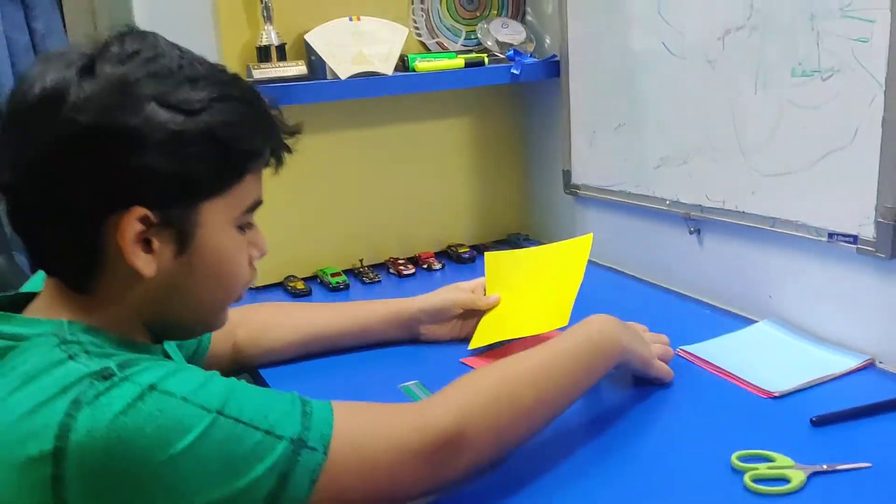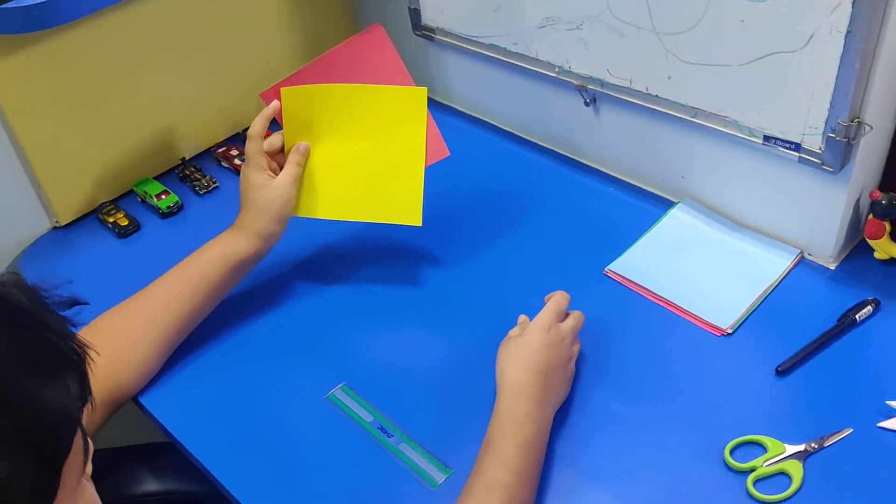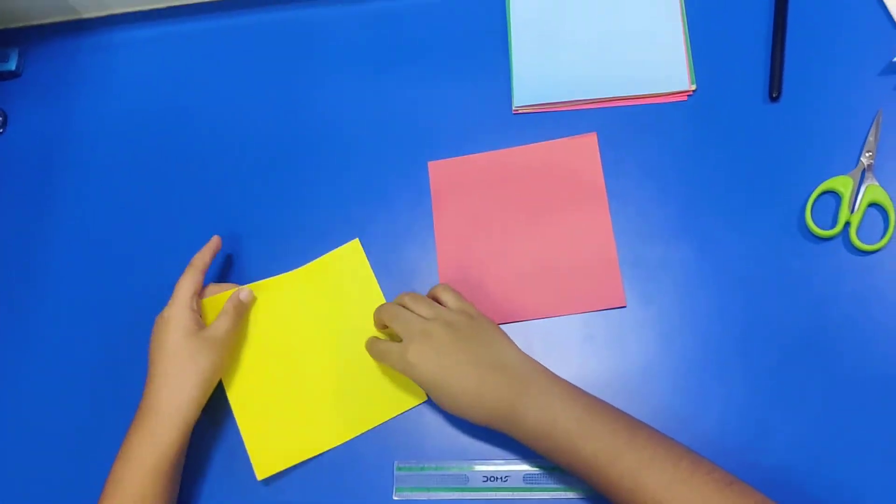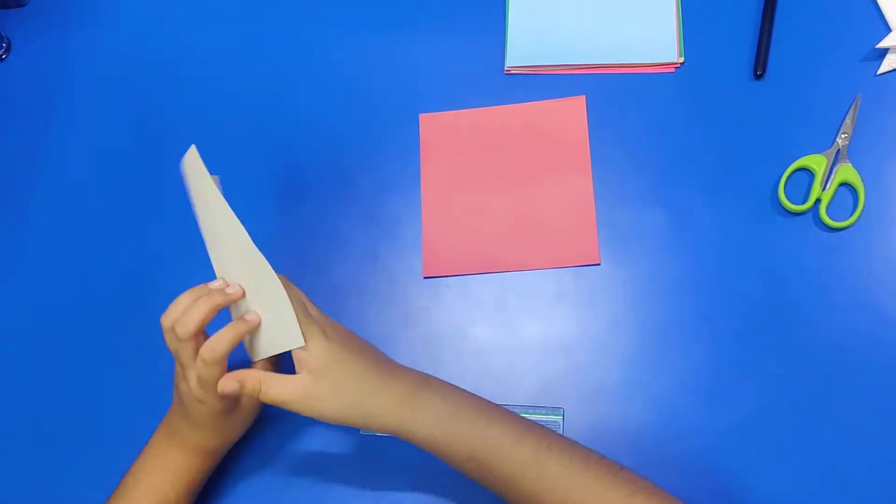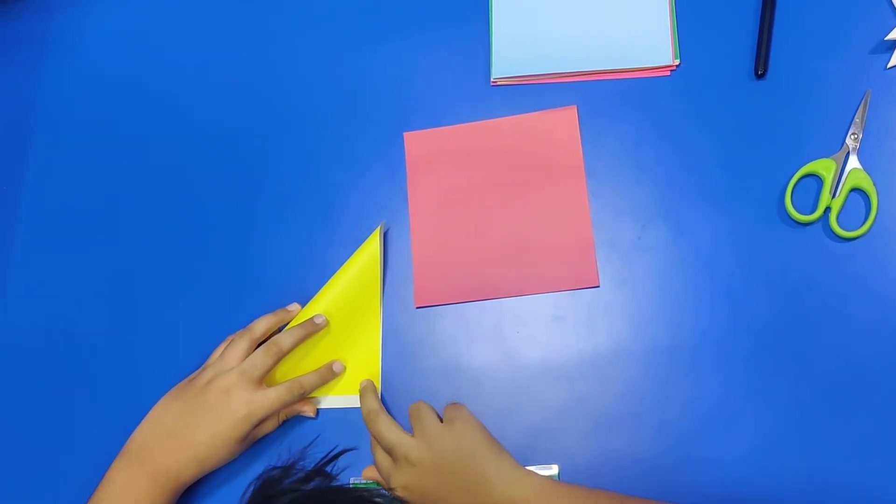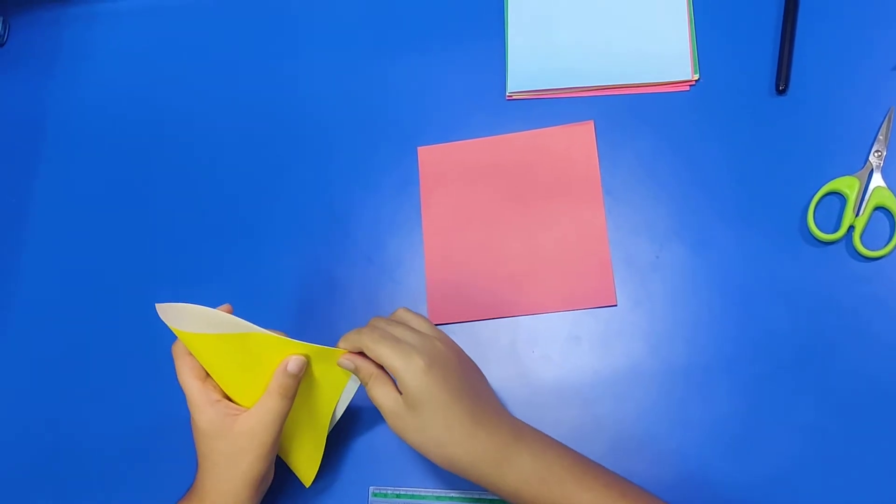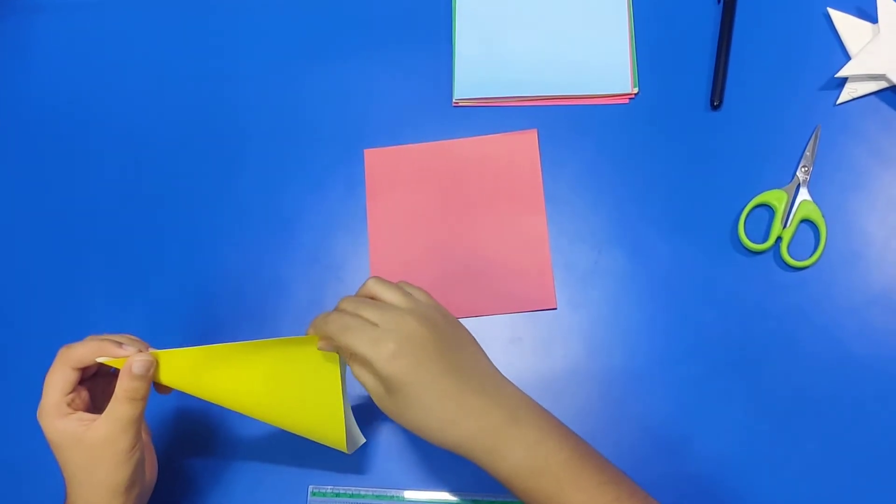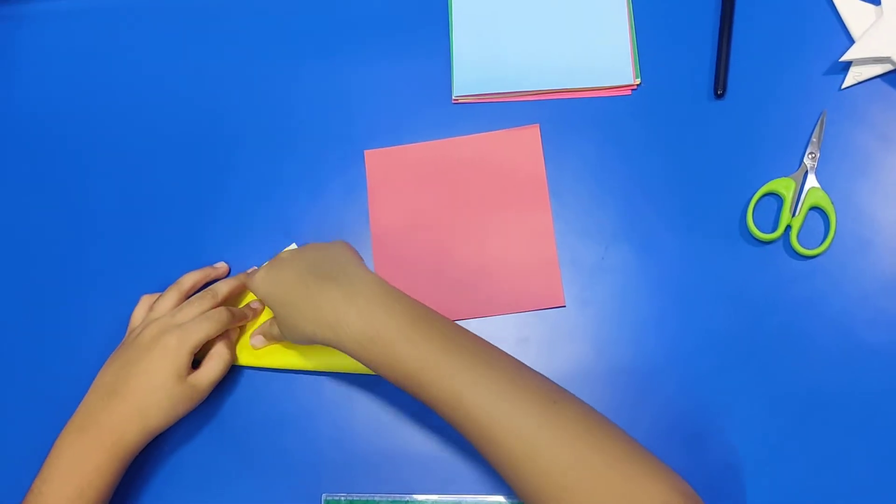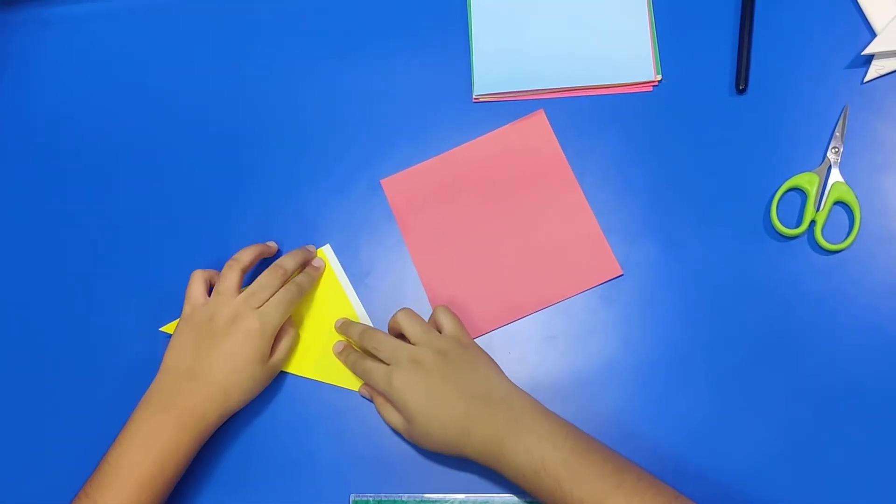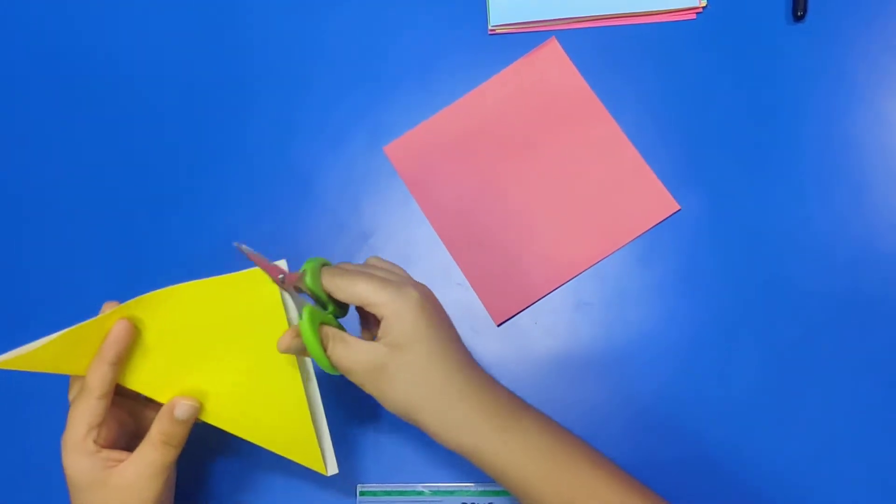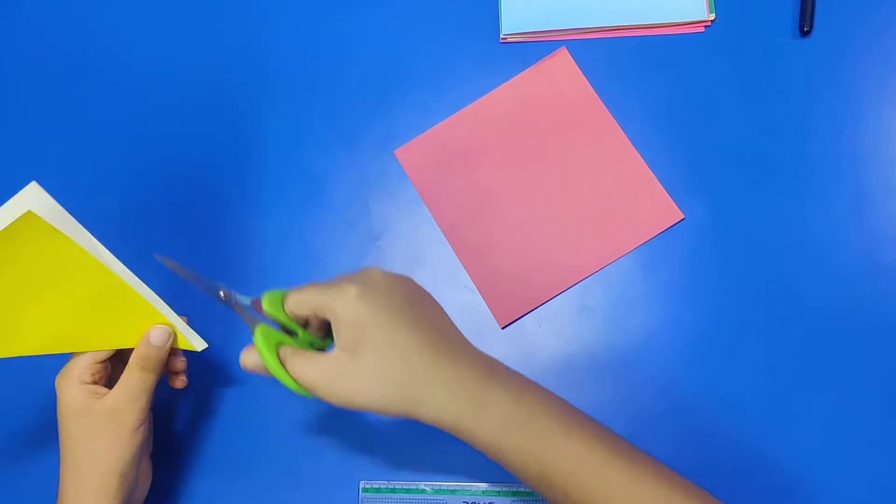First of all, we need two sheets of paper. Squash it. No, mine is not a full square. So now I will make it square. Cut the extra portion.